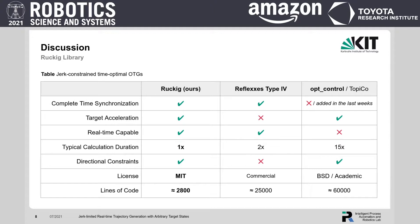In comparison to the Reflexes, Ruckig allows a target acceleration for arbitrary target states. Ruckig is more than twice as fast as Reflexes and an order of magnitude faster than opt_control.